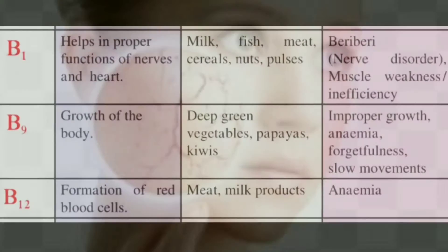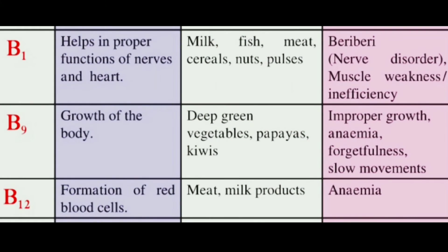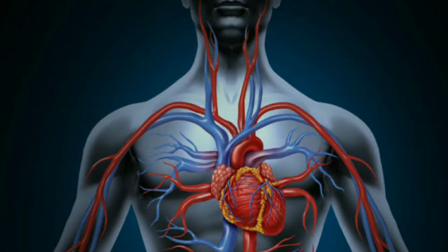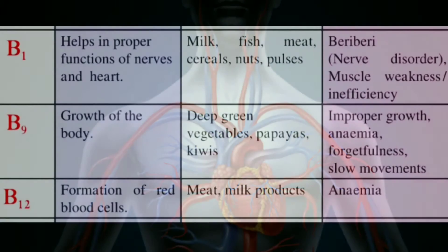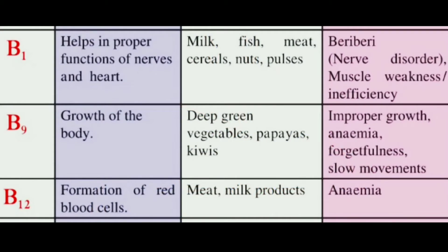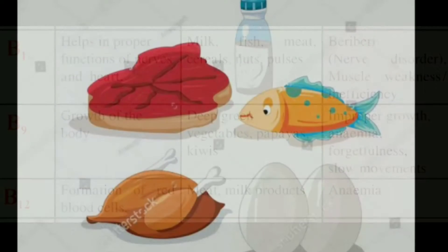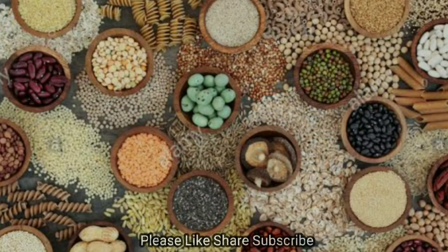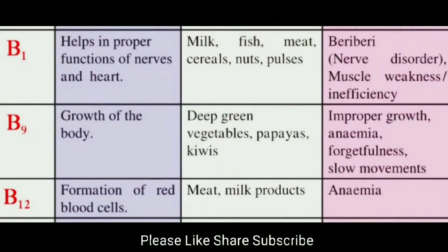Vitamin B1 helps in the proper functioning of nerves and heart. Sources: milk, fish, meat, cereals, nuts, pulses. Deficiency diseases: beriberi, that is, nerve disorder, muscle weakness, and inefficiency.